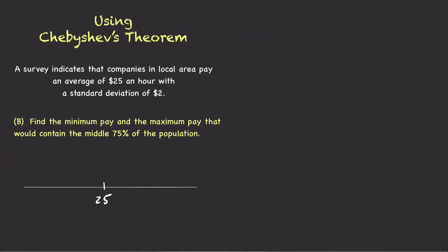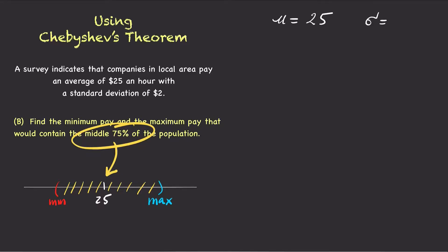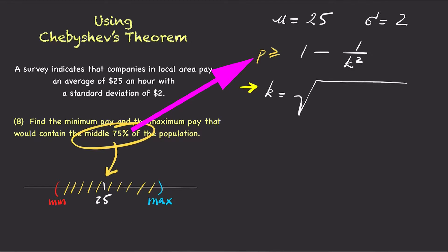Find the minimum pay and the maximum pay that would contain the middle 75% of the population. Again, we cannot use the empirical rule in this situation, but we can use Chebyshev's theorem to find the lower boundary and the upper boundary that would cut off 75% of the population around the mean. Chebyshev's theorem says that the proportion within k standard deviations of the mean is at least 1 minus 1 over k squared. Rearranging, we can write k equals the square root of 1 over 1 minus p.